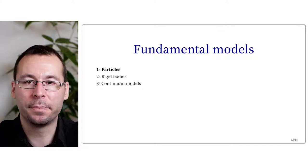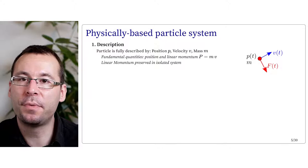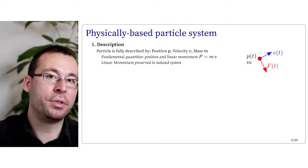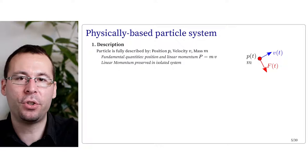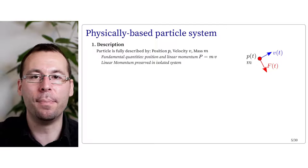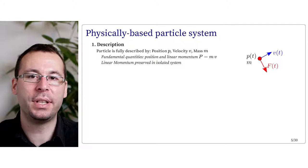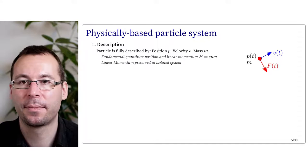Let us first describe the particle-based modeling. Using particles is usually the simplest form of description we can use. A particle is typically described by a position, a velocity, and a mass. The fundamental quantity associated to a particle should be its position and its linear momentum p, which is equal to the mass times the velocity — as the linear momentum is a quantity which is preserved through time and along motion for all isolated systems.